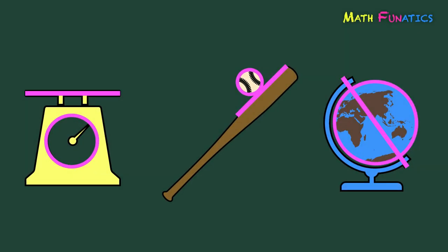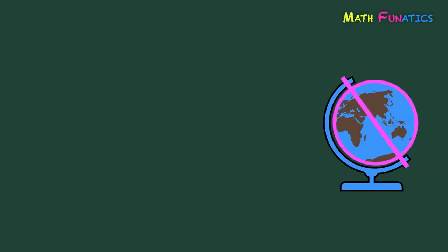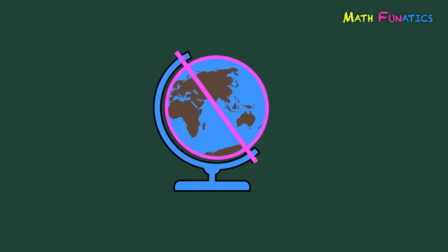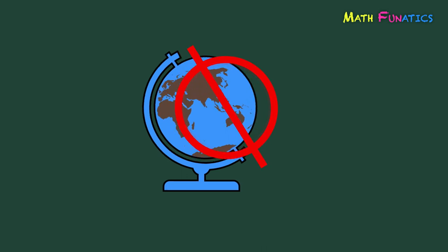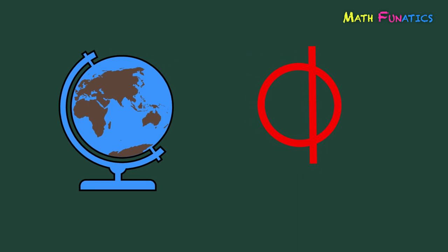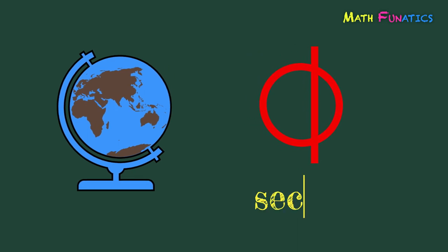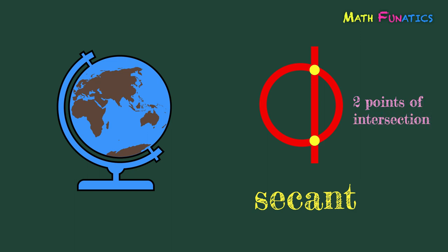Finally, let's take a closer look at this globe. In this figure, the axis, which is a straight line, passes through the globe that is circular in shape. This case, when a line intersects or meets a circle at two points, is called secant. In this situation, the straight line and the circle have two common points or points of intersection.